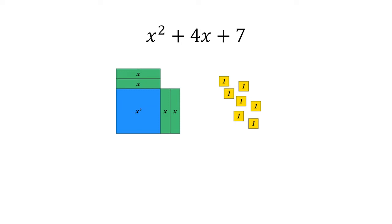They then complete the square by bringing their yellow tiles across and so we have x squared plus 4x plus 4 in a square plus the extra three giving us our x squared plus 4x plus 7.